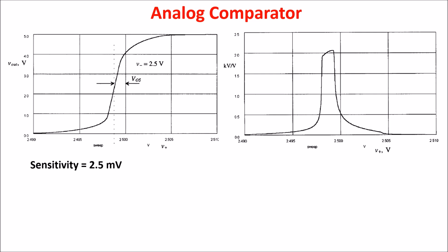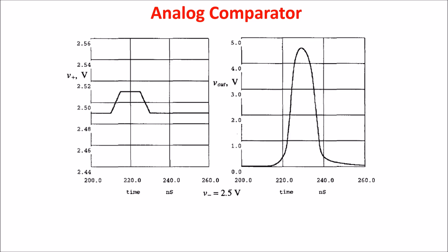The comparator gain can be increased by increasing the transconductance of the preamp, that is, by increasing the widths of M1 and M2, or by adding additional inverters.